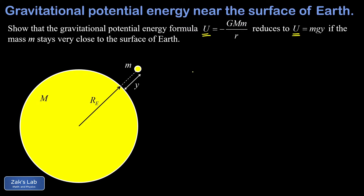Before we get into the meat of the derivation, we have to derive an expression for the acceleration induced by gravity near the surface of the planet. This goes back to Newton's law of gravitation, which says that the force of gravity between two masses is GMm over r squared, where big M and little m are the sizes of the two masses, big G is the universal gravitational constant, and r is the center to center separation distance.